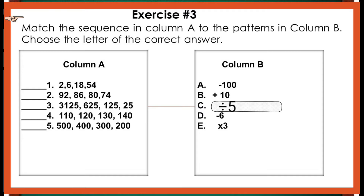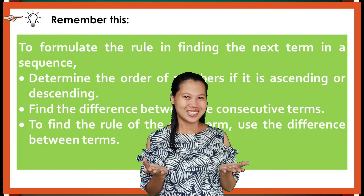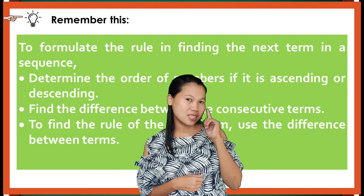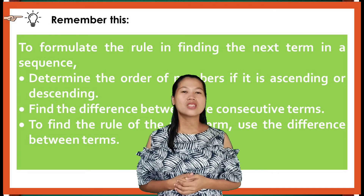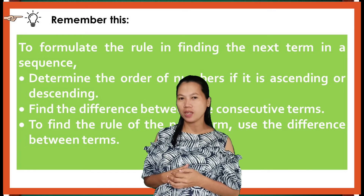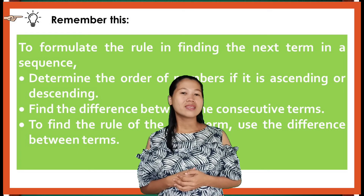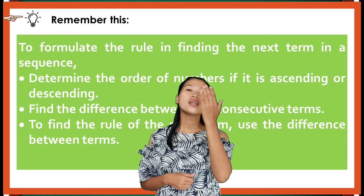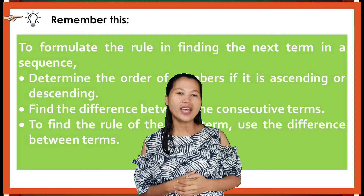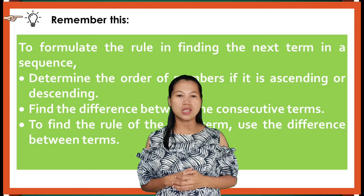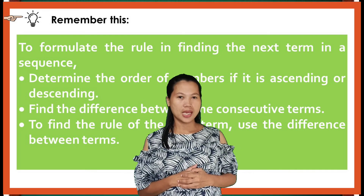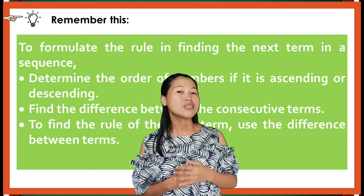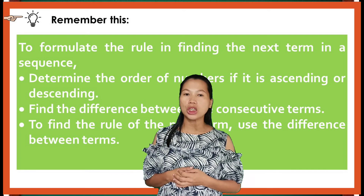If you got it right, terrific! Congratulations! You really did well. Remember this: to formulate the rule in finding the next term in a sequence, determine the order of numbers if it is ascending or descending, find the difference between the consecutive terms, and use the difference between terms to find the rule of the next term.